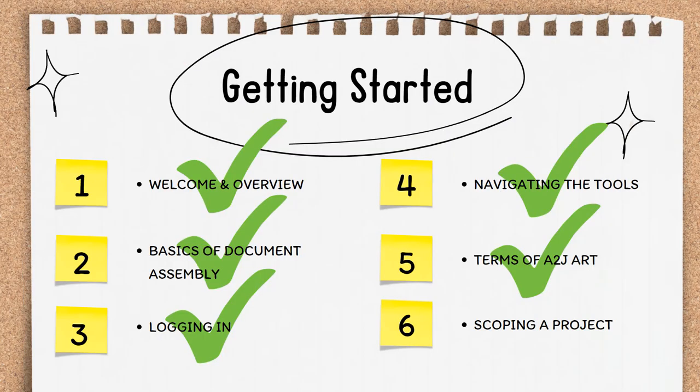Now you know the terms of A2J art that we'll be using throughout the course. I've included a fun word search in the course training materials as your activity for Section 1, Part 5. You can find it on the course landing page. Join us next for the final video in the Getting Started section, related to scoping a project.